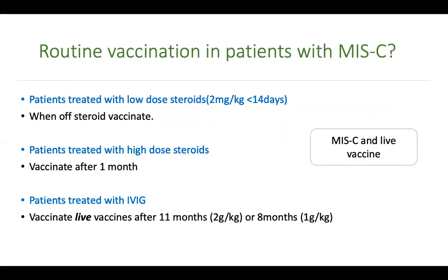Regarding routine vaccination in MIS-C patients: killed vaccines can be given normally, but live vaccines require planning since immunosuppressing or immunomodulating agents are used. For mild MIS-C treated with only 2 mg/kg steroids for less than two weeks, you can vaccinate once the child is off steroids. If treated with high-dose steroids such as methylprednisolone pulse 10 to 30 mg/kg for three days followed by 2 mg/kg, the total course exceeds two weeks - in that scenario, wait one month after stopping steroids before giving a live vaccine.